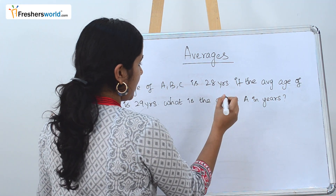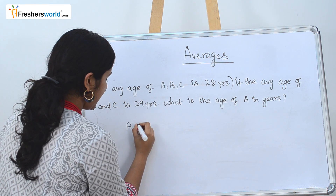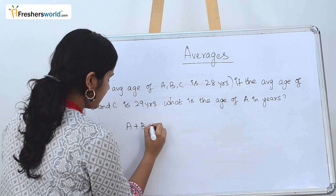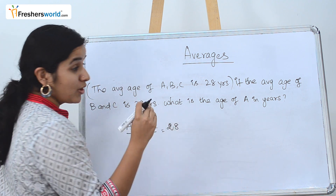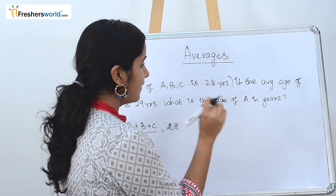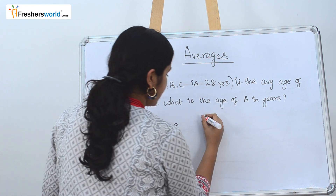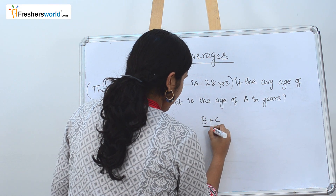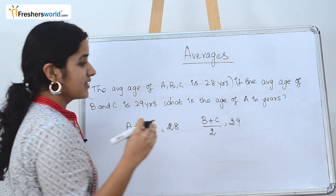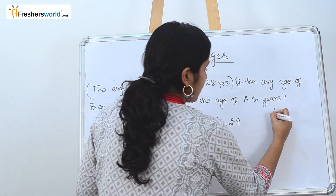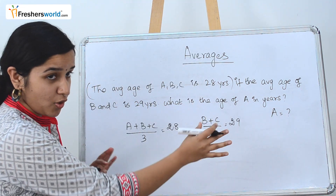Average age of A, B, and C is 28 years. So we write this as: A plus B plus C divided by 3 is equal to 28 years. The second part of the question: if the average age of B and C is 29 years, then B plus C divided by 2 equals 29. We are asked to find the age of A. So let's solve these two equations.